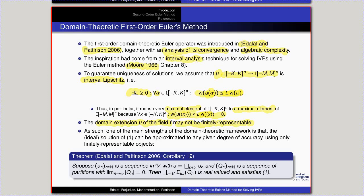Domain theory is tailor-made for approximation. One of its main strengths is that the ideal solution of our IVP can be approximated to any given degree of accuracy using only finitely representable objects. There is a theorem in the original paper by Edalat and Pattinson: if you have a sequence u_n converging to the extension of the field — taken to be finitely representable — and a sequence of partitions whose norm goes to zero, then the domain-theoretic supremum is real-valued and gives the solution to the IVP.